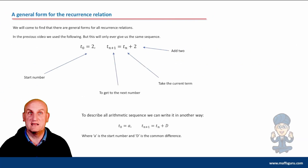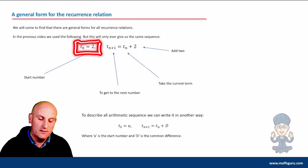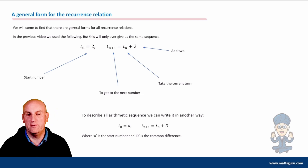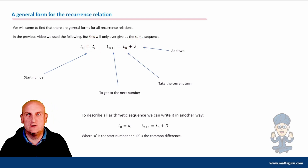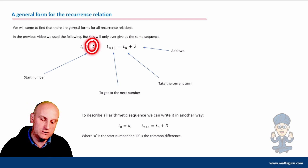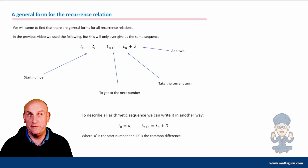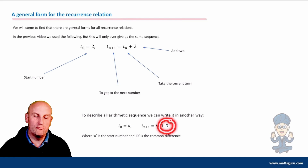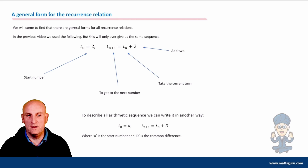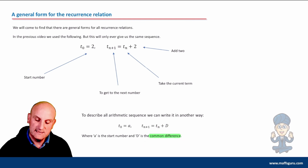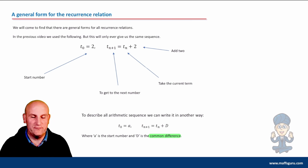Now a general form of the recurrence relationship basically just says we don't want to hard code numbers in. Not all my sequences will start at two and not all of them will add two. So I want a more generic way of being able to do it. What we can do is replace those numbers with letters — we use algebra. We let the first number be the letter A, and we let the rule be plus d. We actually call this the common difference — the difference is the same, it's a common difference.